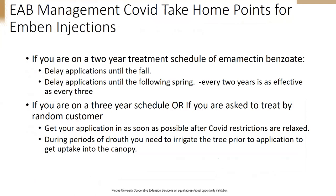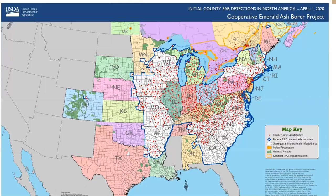If you're on a three-year schedule and this is the year to treat, you want to treat as soon as possible. The longer you wait, the more larvae will become pre-pupae or pupate and not feed. Make sure you irrigate prior to treatment, because during drought you won't get adequate uptake. You want adequate soil moisture for good translocation. This applies whether you're on a three-year schedule or responding to a homeowner who notices a problem — if the trees can be saved, go in and treat as soon as possible, and just make sure you irrigate.